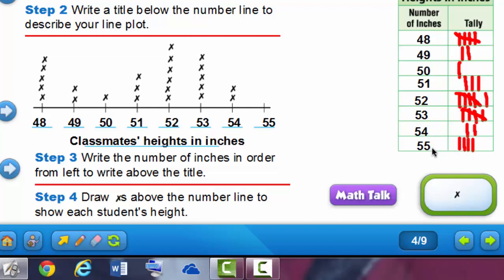And the last piece of data, we have 55 inches and there were 1, 2, 3, 4 students who were 55 inches tall. And there is our line plot.